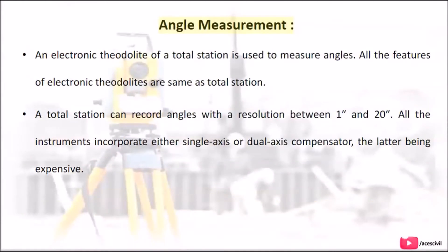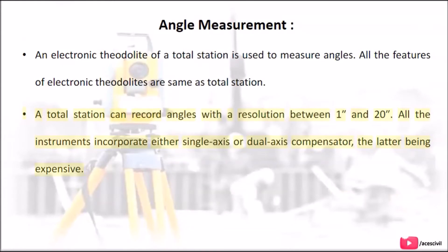Angle measurement: An electronic theodolite of a Total Station is used to measure angles. All the features of electronic theodolites are the same as Total Station. A Total Station can record angles with a resolution between 1 and 20 seconds. All instruments incorporate either a single axis or dual axis compensator, the latter being more expensive.